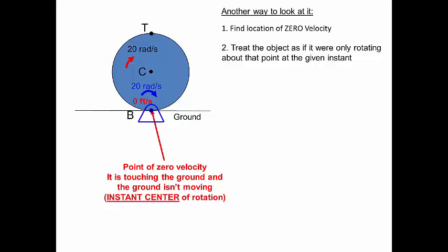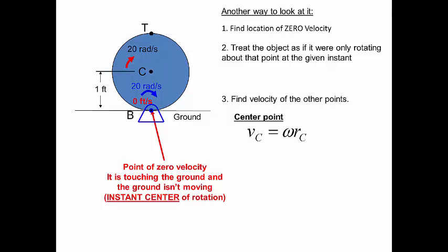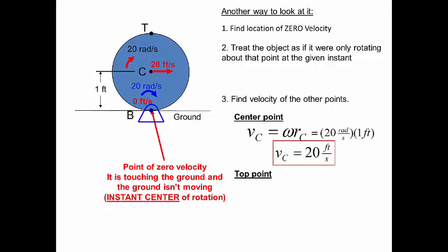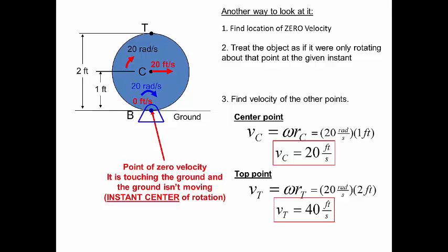We treat it at this instant as if it were fixed at that pinned point and rotating about it. For the center point, the velocity of C equals the angular velocity times the radius from the pinned point to C — in this case 1 foot — so the velocity at C is 20 radians per second times 1 foot, which is 20 feet per second. For the top, the radius from the pinned point to the top is 2 feet, so the velocity at the top is 20 radians per second times 2 feet, equaling 40 feet per second. This gives us a velocity profile.